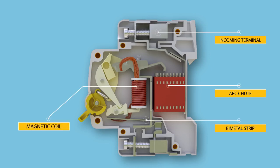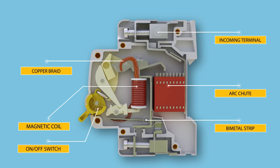The magnetic coil is part of the thermal tripping arrangement, where in case of short circuit or heavy overloads, a strong magnetic field is produced in the coils. Copper braid connects the moving element with the static element. The on-off switch is the operator with which we manually interrupt or turn on the electric circuit. In the outgoing terminal, we connect the outgoing phase from the circuit breaker.